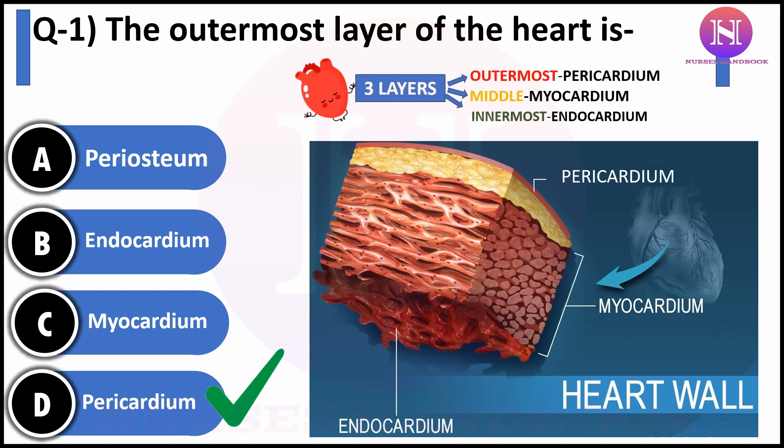and the innermost endocardium. Pericardium is further divided into two: the outer fibrous pericardium and the inner serous pericardium, or epicardium. There is serous fluid — otherwise known as pericardial fluid — in between these two layers of pericardium.